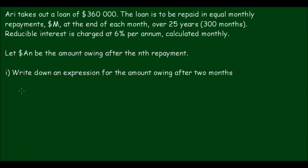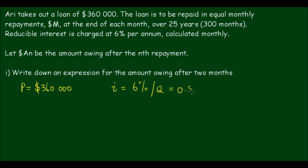Before we begin, I'm going to let P, the principal, equal the $360,000 that RE has loaned out. And the interest, which I'll denote with a small i — not to be confused with imaginary numbers — is 6% per annum, but I want it in per month, so I have to divide by 12. This works out to be 0.5% per month, or expressed as a decimal, 0.005.